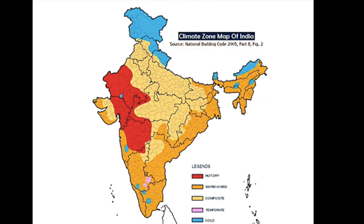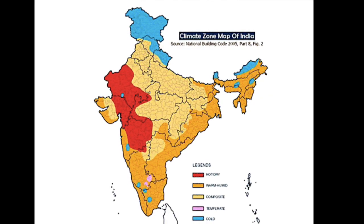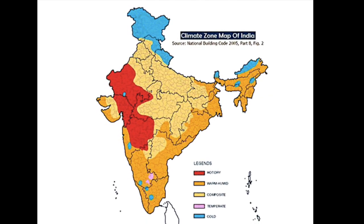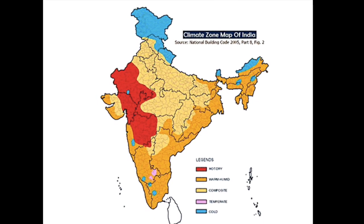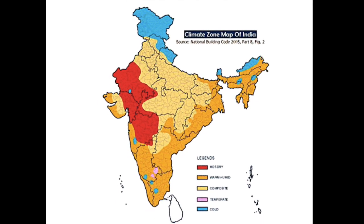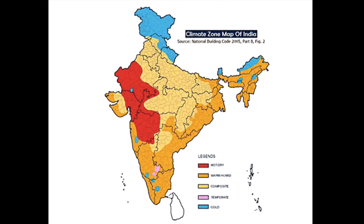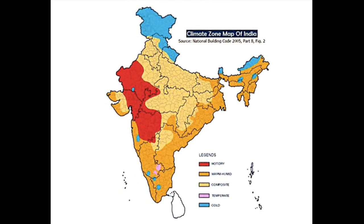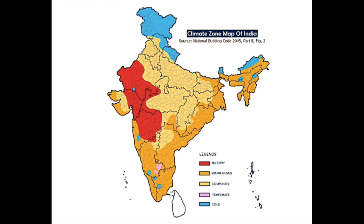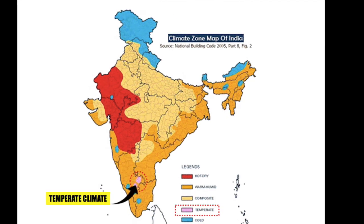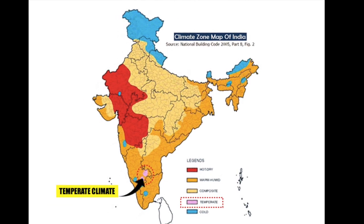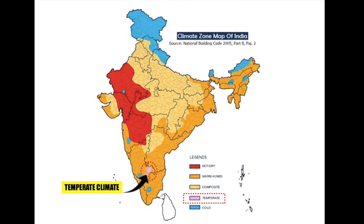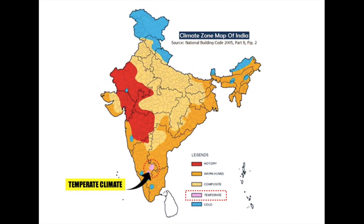India is divided into five climate zones. They are hot and dry, warm and humid, composite, temperate and cold. In these five climate zones, Bangalore falls under the temperate climate zone.